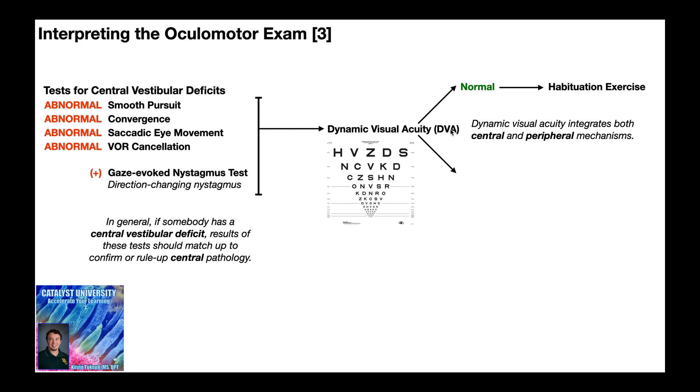Now the other result of the DVA could be that it's abnormal, so it's a three-line difference or more. Now they're still going to require habituation exercises because they have a central vestibular deficit, but having an abnormal DVA suggests that their gaze stabilization is impaired.